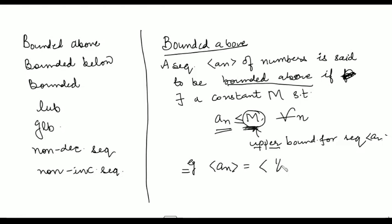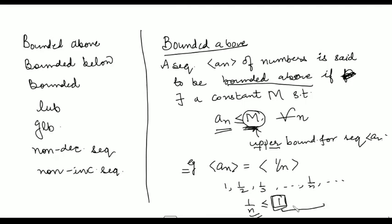For example, if you consider a_n to be 1/n, then the whole terms of the sequence are less than or equal to 1. So this sequence is bounded above by 1. Moreover, every number greater than 1 — if you consider 2, 3 — all these are upper bounds for the sequence 1/n. So 1, 1.1, 2, and so on are all upper bounds, and the sequence is bounded above by the number 1.